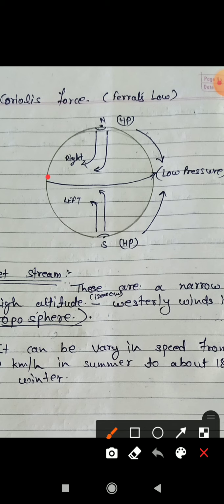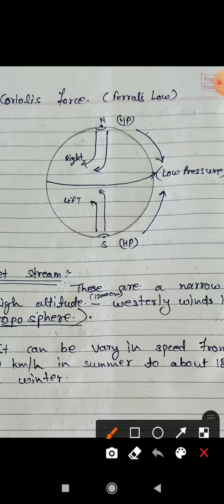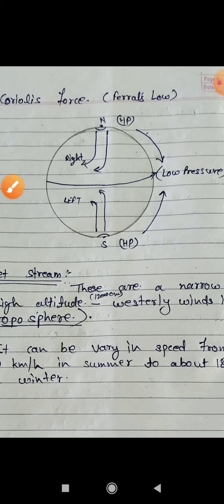The equatorial area is a very warm area, so the air pressure is low there. The air moves from the North Pole to the equator and from the South Pole to the equator — from high pressure to low pressure. This is how we understand upper air circulation and high and low pressure systems.